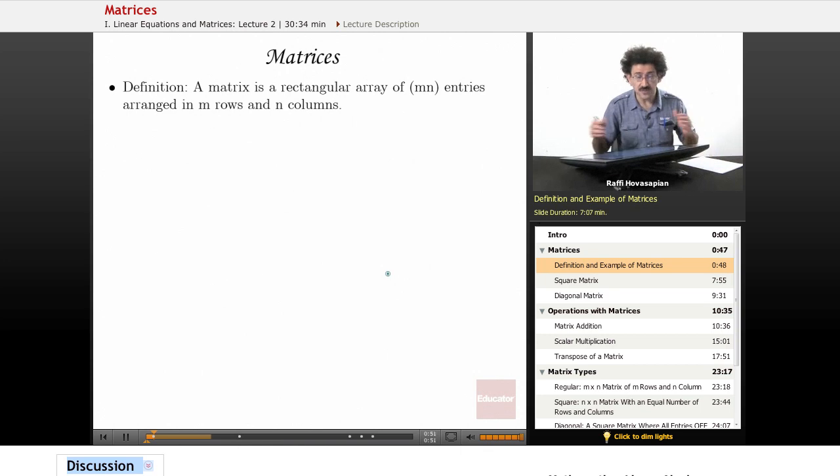So the definition: a matrix is just a rectangular array of m×n entries arranged in m rows and n columns. For example, if I had three rows and two columns matrix, the number of entries in that matrix is three times two, six, because they're arranged in a rectangular fashion. That's all this m×n means.